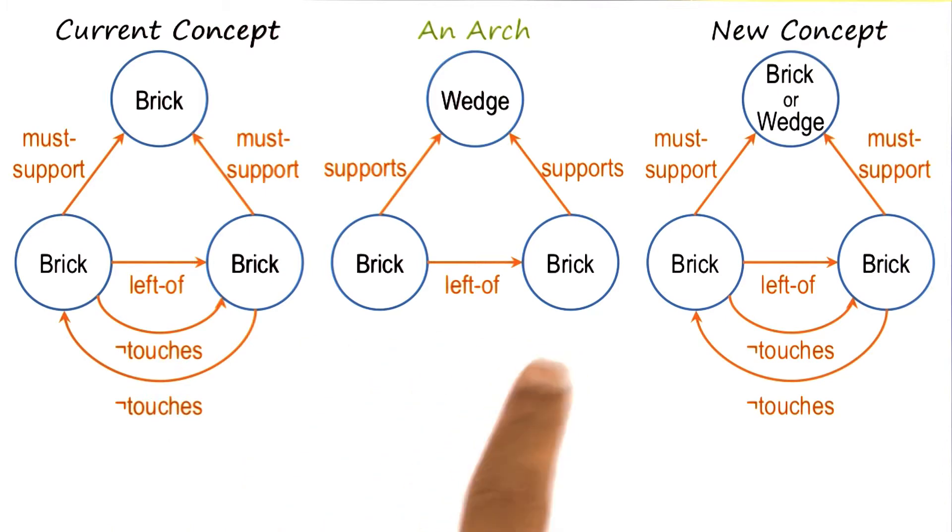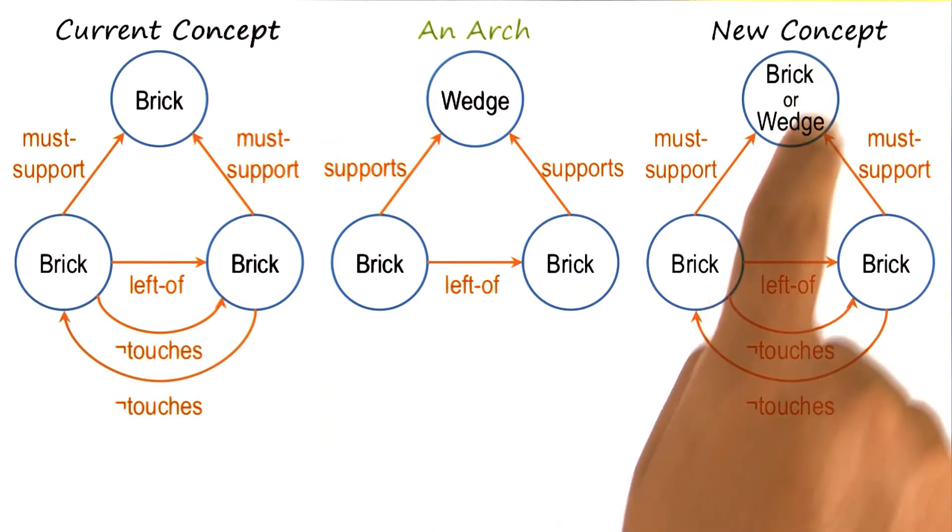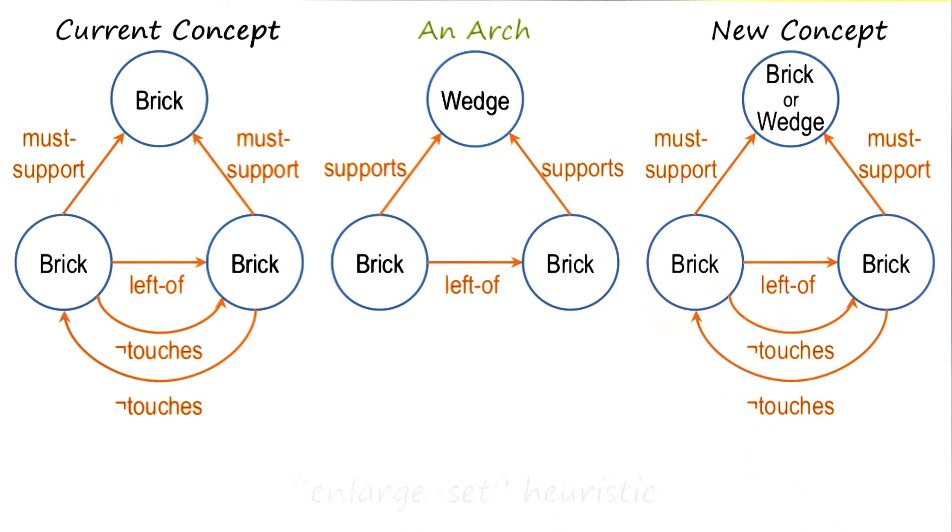Well, the simplest thing the AI program may do is to replace this brick here in the current concept definition by brick or wedge. So that makes sure that the new example is included in the definition of the concept. We'll call this the enlarge-set heuristic.